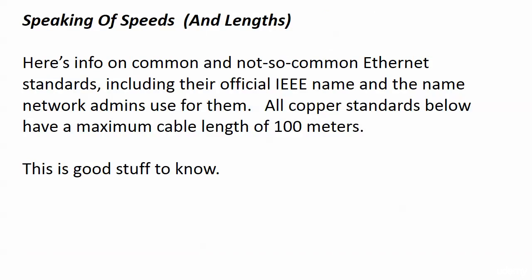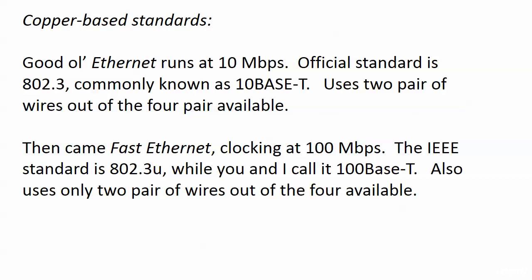Let's talk about Ethernet standards. I'll give you the official IEEE name and the name that regular people — network admins — use. All the copper standards we discuss have a maximum cable length of 100 meters, good to know for the field and likely to come up on your exam. Regular Ethernet runs at 10 Mbps; the official standard is 802.3, and it's commonly known as 10Base-T. Ethernet uses two of the four available wire pairs.